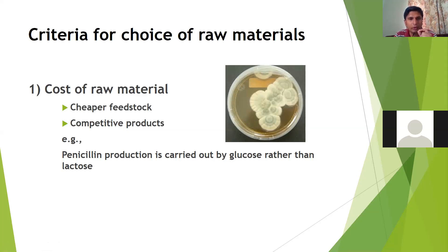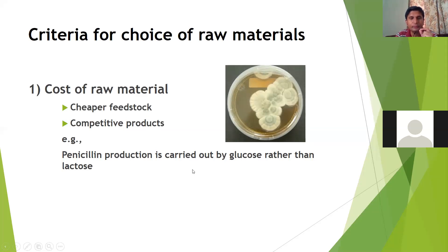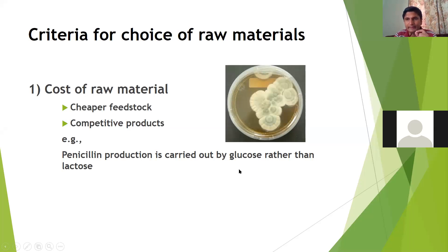Although to produce penicillin, lactose is more efficient and more desirable, we mostly select glucose-containing substrates. The reason is their cost — the cost of glucose-containing raw materials is less compared to lactose-containing raw materials.